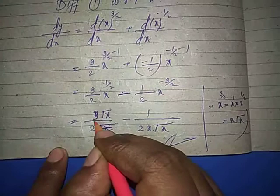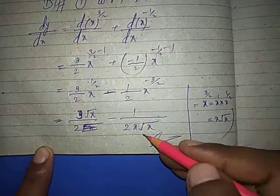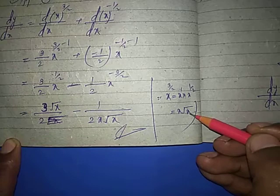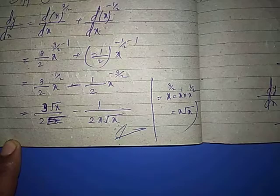This simplifies to 1 minus 1 divided by 2 x to the power 3 by 2, which equals 1 minus 1 over 2 x root x.